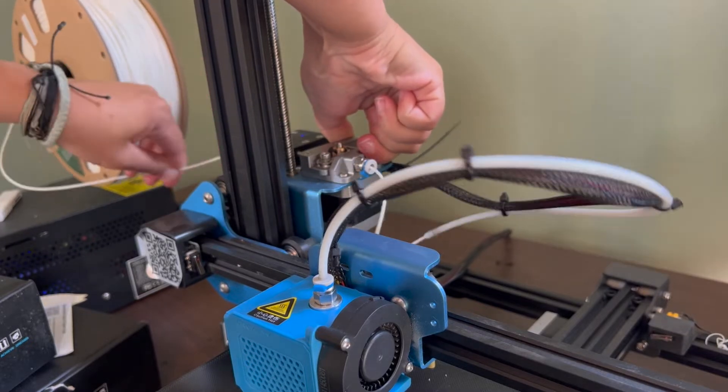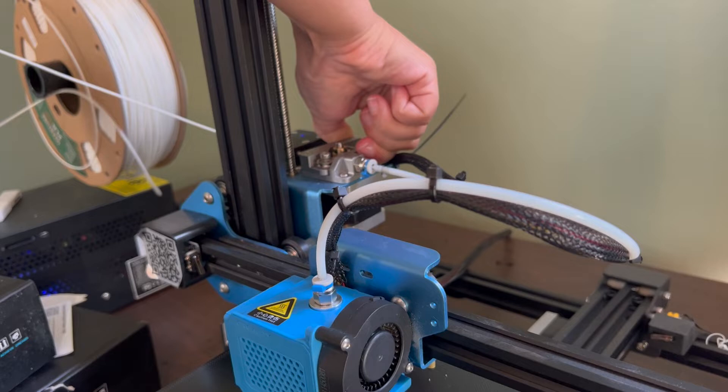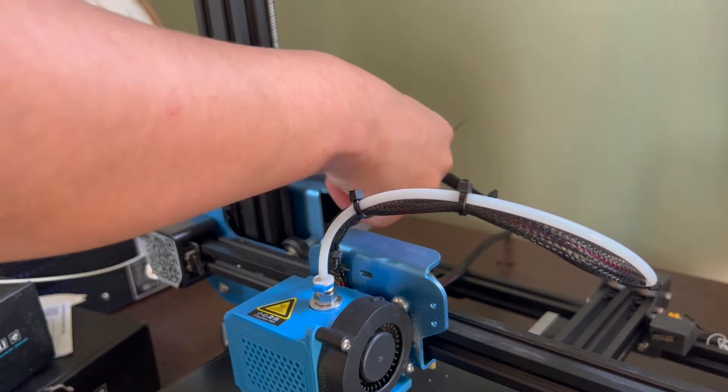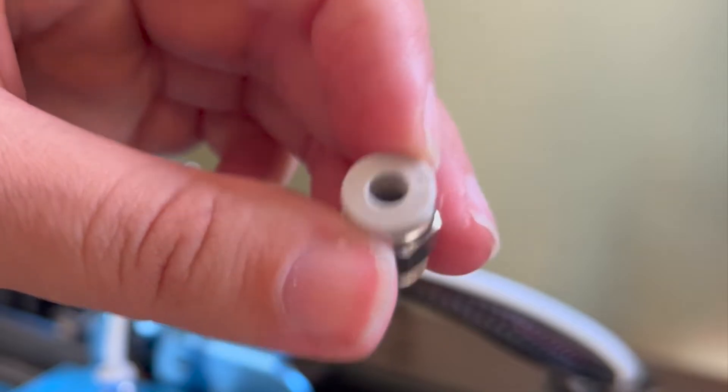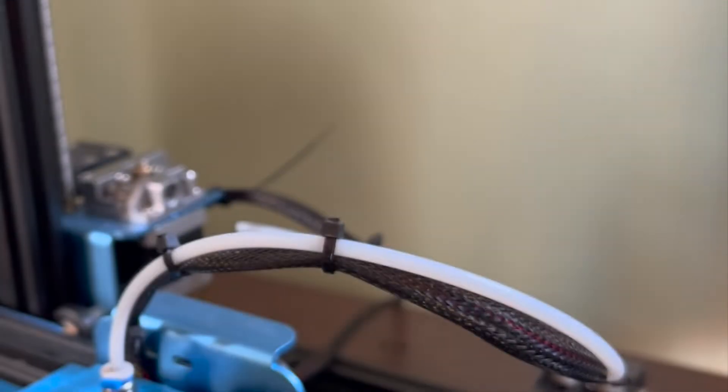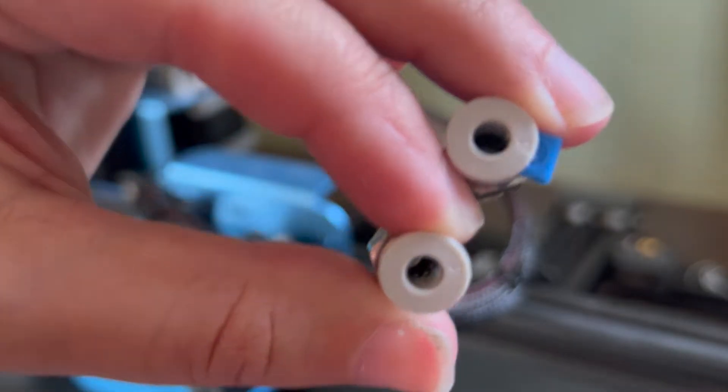You will then want to unscrew the tube clamps so that you can remove the tube. Hopefully you can see here on camera that the clamp has definitely been stripped on the inside where the teeth usually are. They are no longer. I have no idea how this happened, but it did, so this one is bad and has to go.